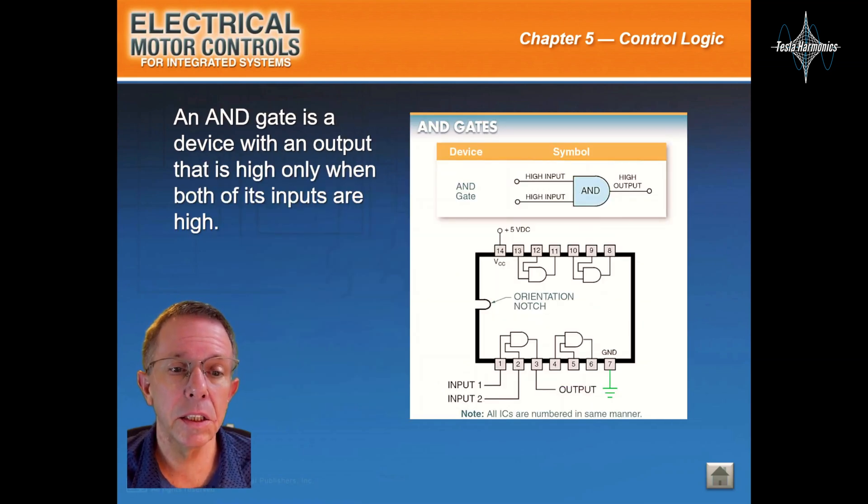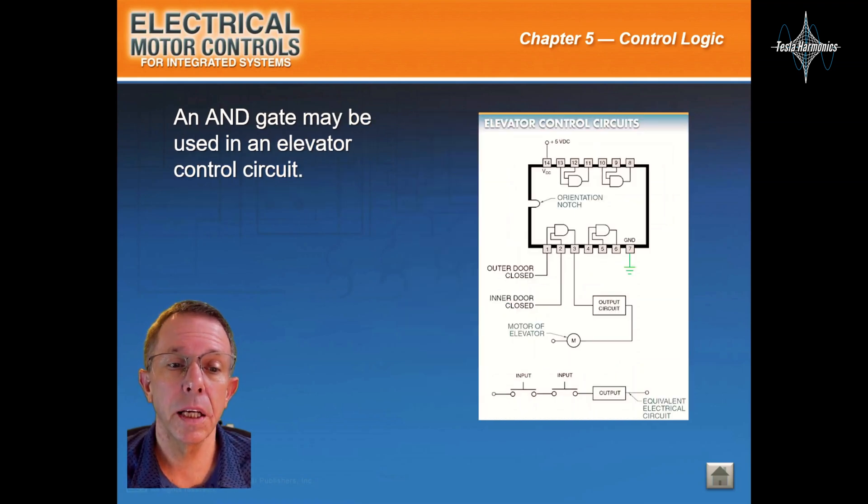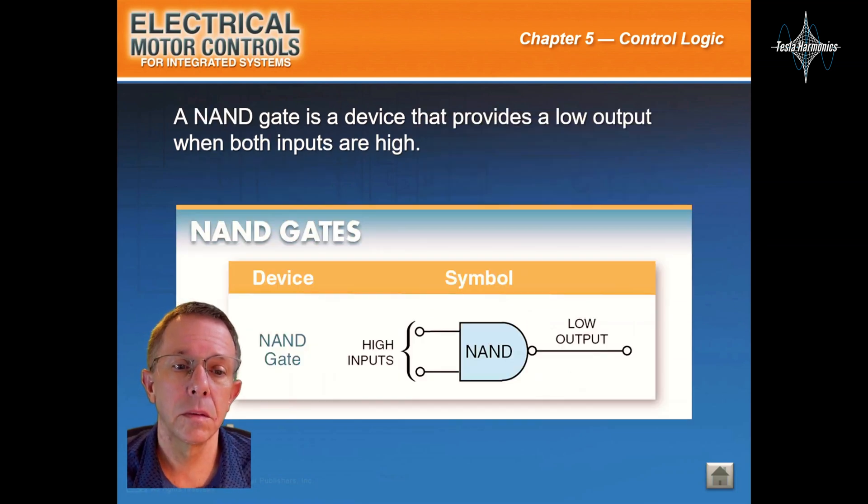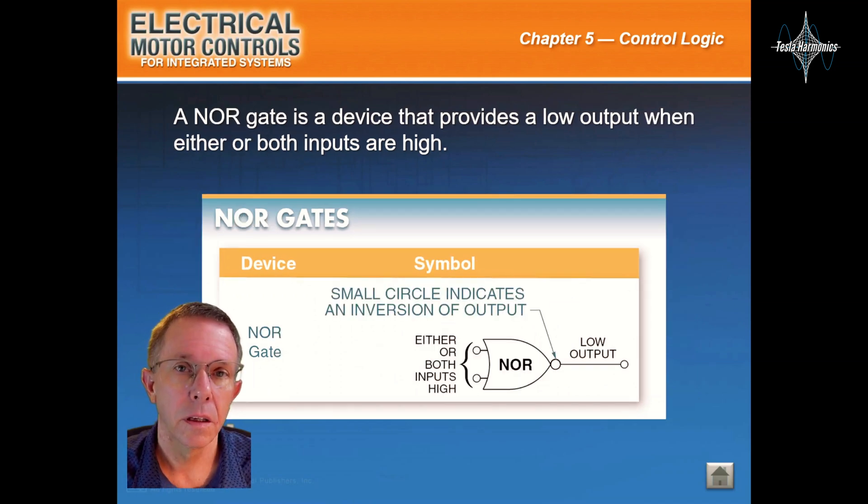An AND gate is a device with an output that is high only when both of the inputs are high. An AND gate may be used in an elevator control circuit. An OR gate is a device with an output that is high when either or both inputs are high. A NAND gate is a device that provides a low output when both inputs are high. A NOR gate is a device that provides a low output when either or both inputs are high.